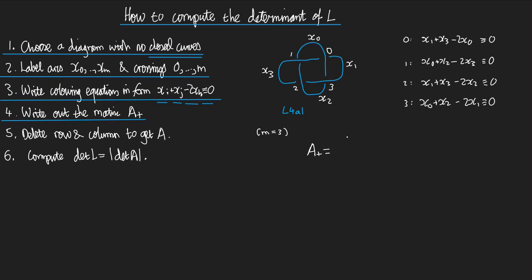The skeleton of the matrix A plus looks like this. It's going to be a big square matrix, and it's going to have rows called 0, 1, 2, 3. And it's going to have columns called x0, x1, x2, x3.